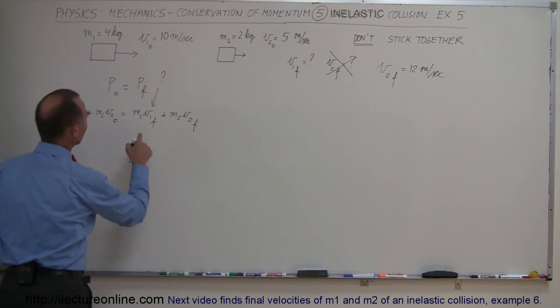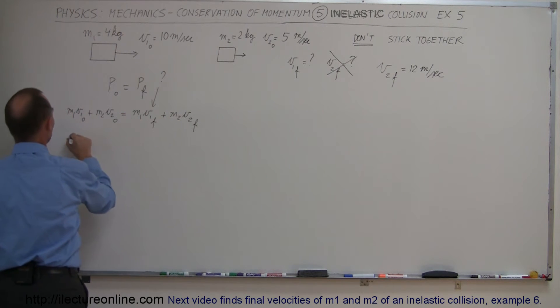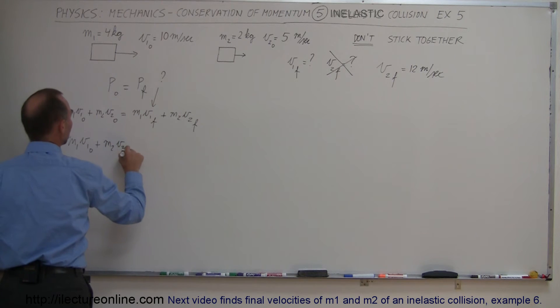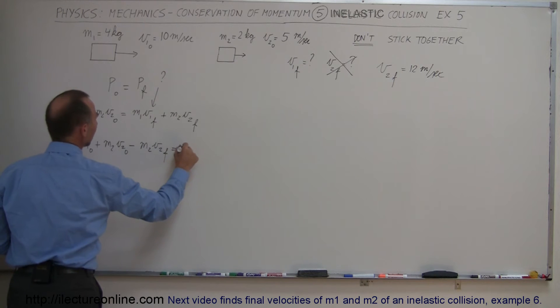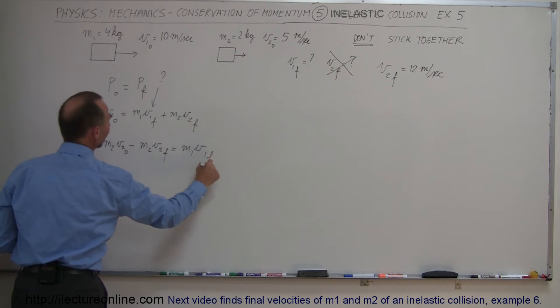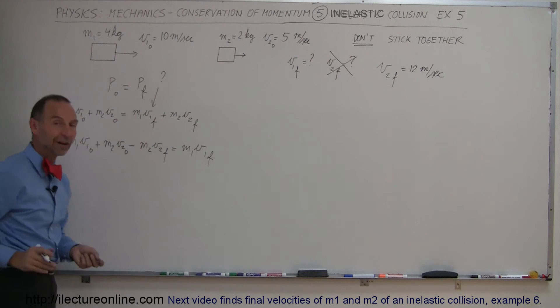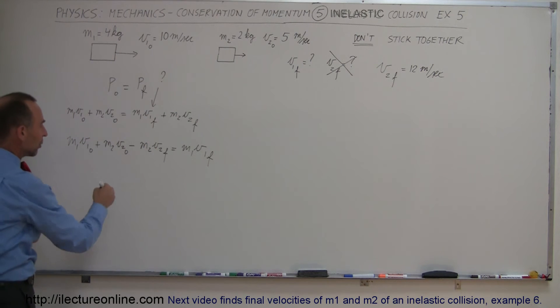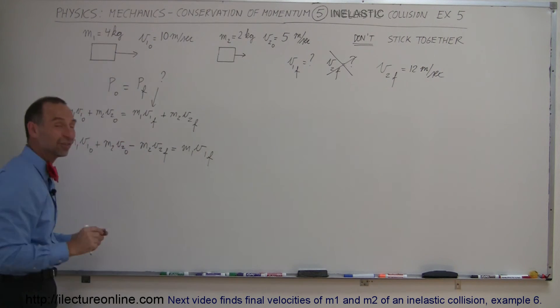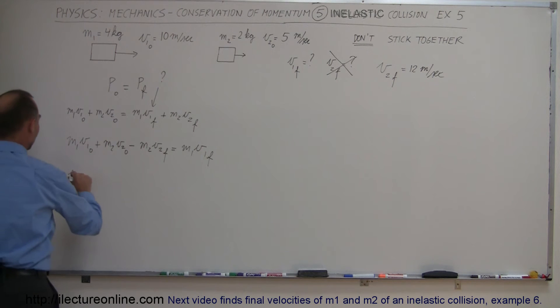Let's now continue. Let's solve for V1 final. We'll move this term over to the left side of the equation. So we have M1 V1 initial plus M2 V2 initial minus M2 V2 final equals M1 V1 final. Finally we'll solve for V1 final by moving it to the left side of the equation and dividing both sides by the coefficient which is M1.